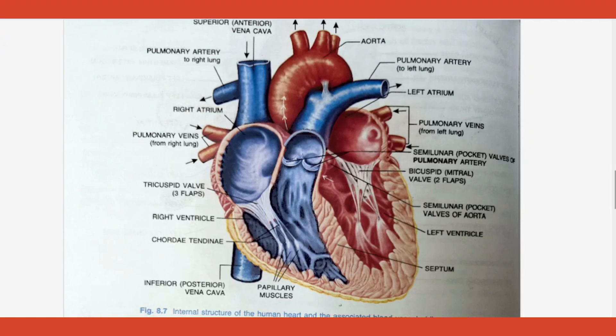To differentiate which is right and which is left, we use direction along the name. Imagine a person lying down on your book facing you — his right and left will be opposite to yours. So this side is the left atrium and the other is the right atrium. You can also see larger chambers below — those are called ventricles: left ventricle and right ventricle. So there are four chambers in total.